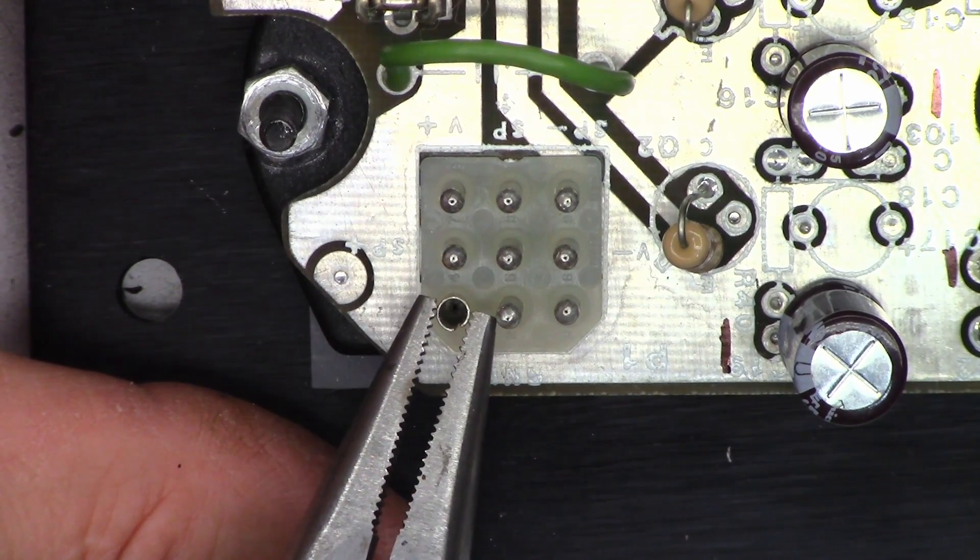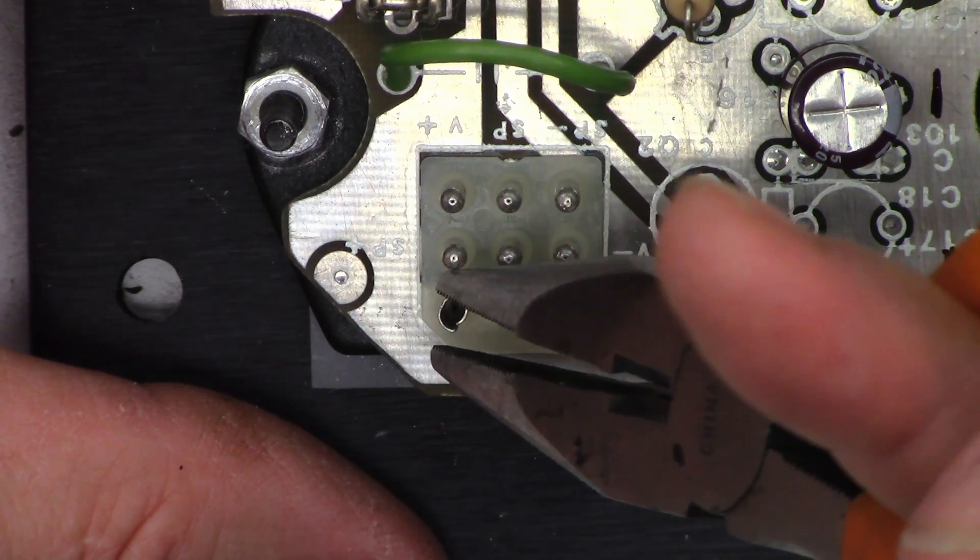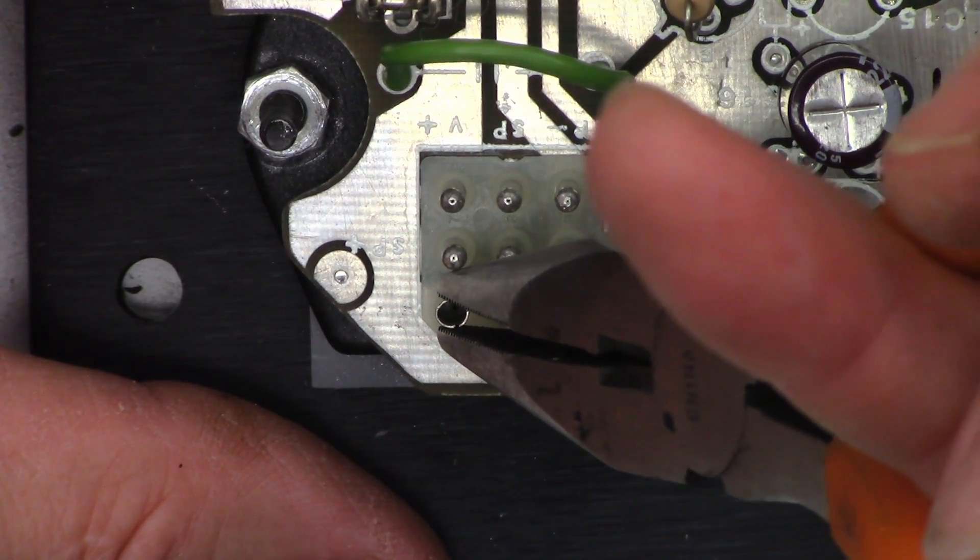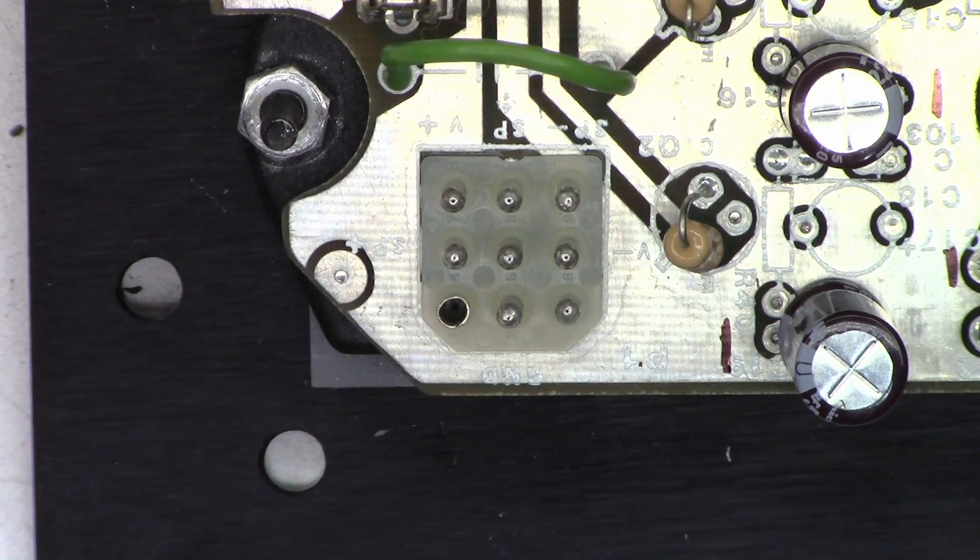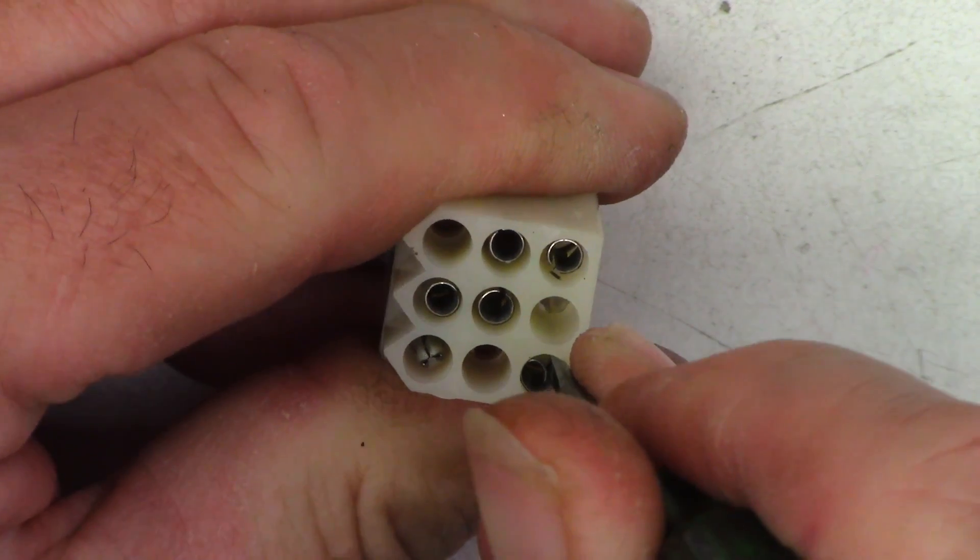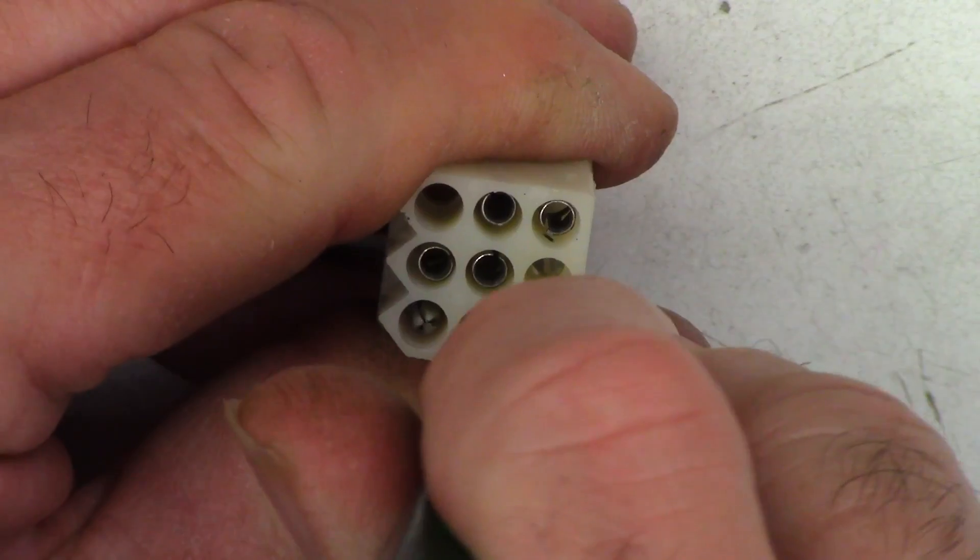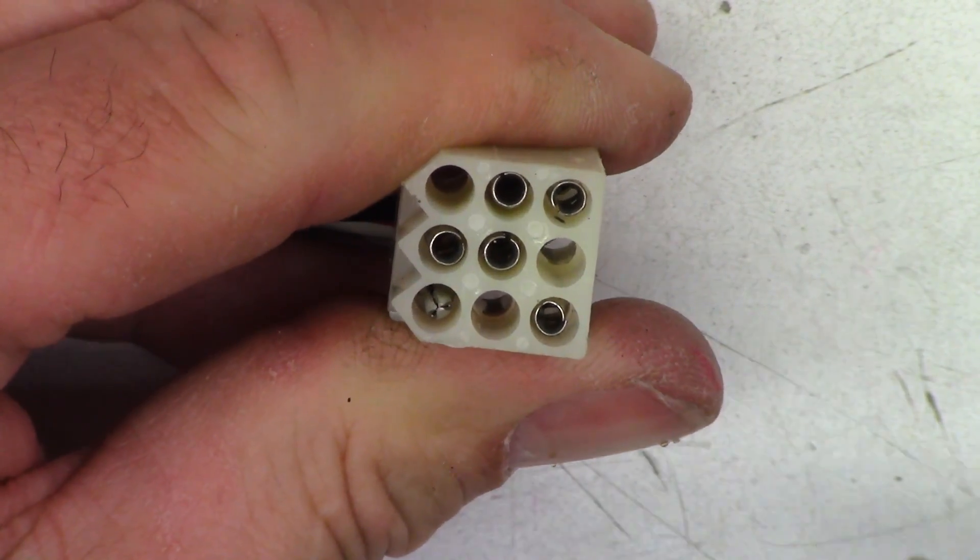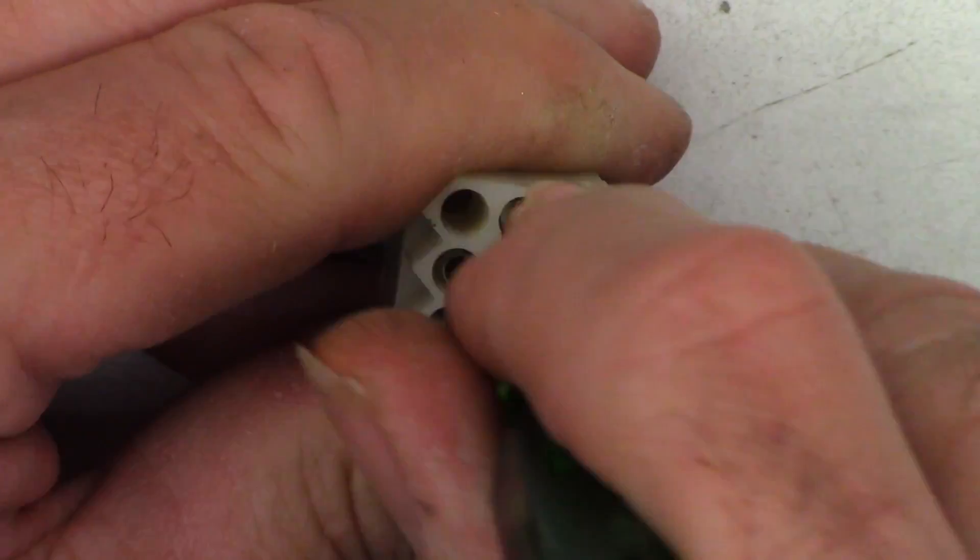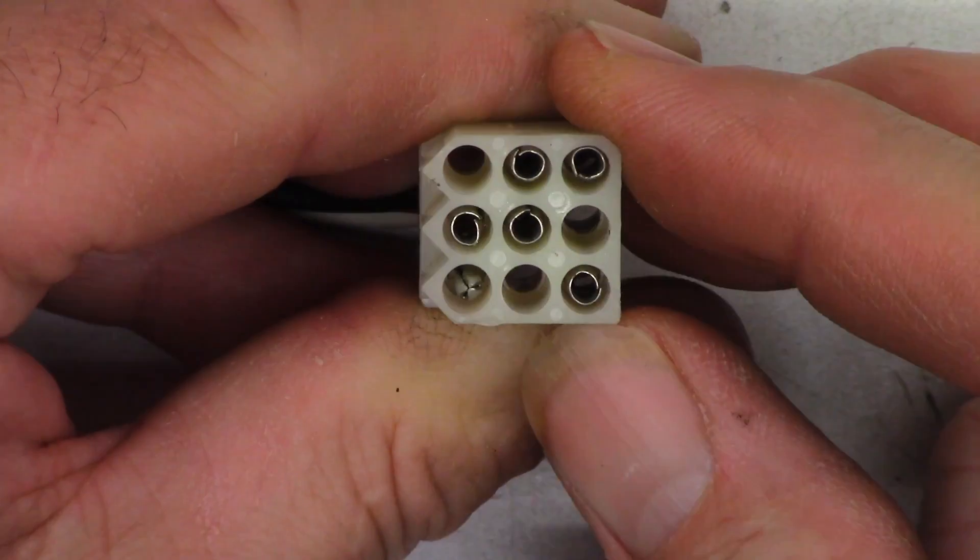All right, we'll go ahead and retension the Molex connector right now, just add a bit of pretension. Don't worry about it if it's not perfectly round. Once the pin goes into it, it's going to squish it back out again. And we'll do the same thing on this side. Just gently bend these pins in just a little bit to add just a little bit of extra pretension to them.